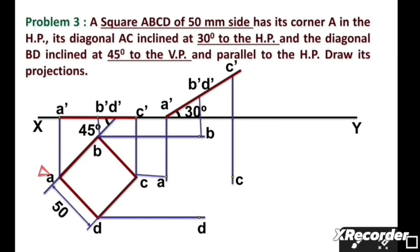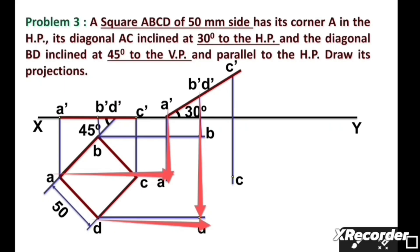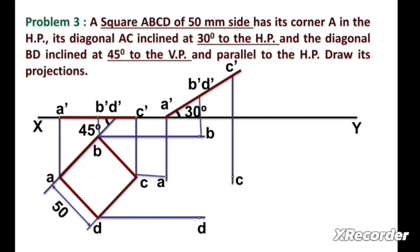We draw a horizontal line from A and a vertical line from A dash — this intersection gives point A. A horizontal line from D and vertical line from D dash gives point D. A horizontal line from B and vertical line from B dash gives point B. We then join all the points with straight lines as shown in the figure to obtain the front view shape.